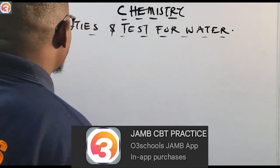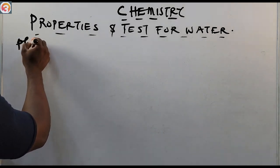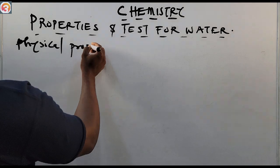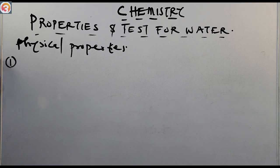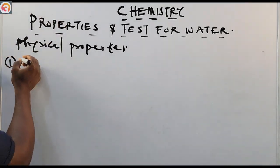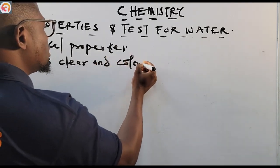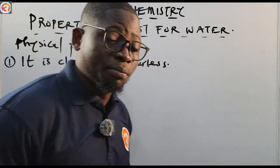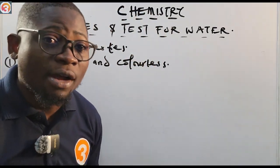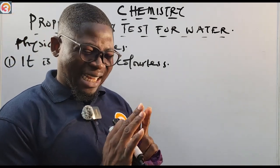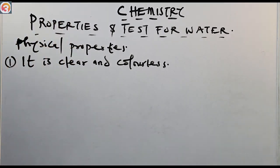Let's go — properties and tests for water. First, the physical properties of water. Number one: water is clear and colorless. You don't see blue water or red water — water is supposed to be clear and colorless.